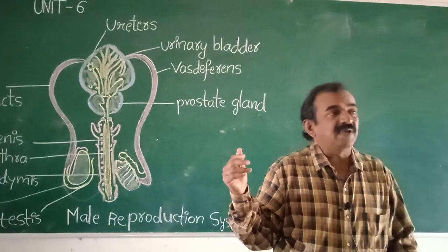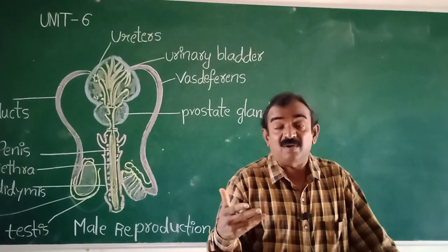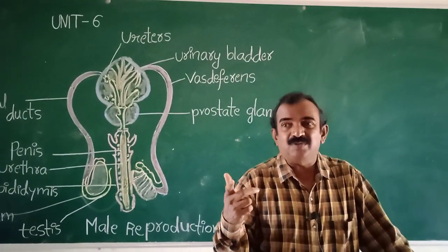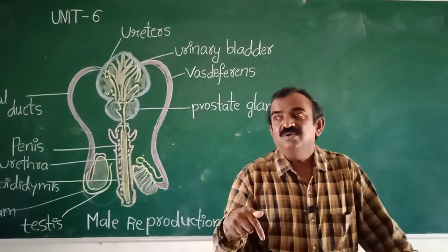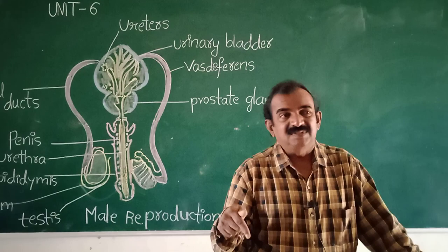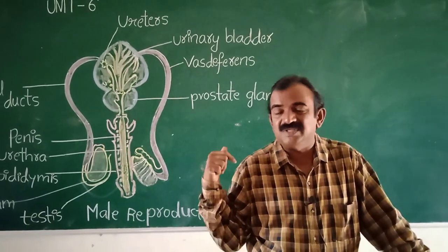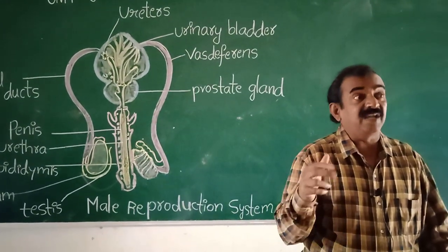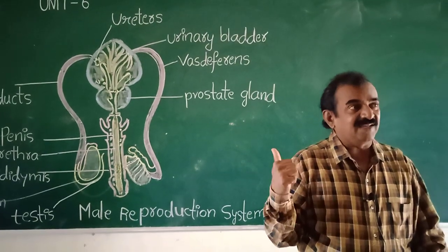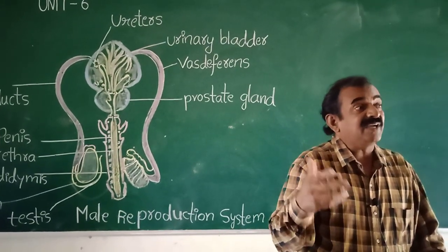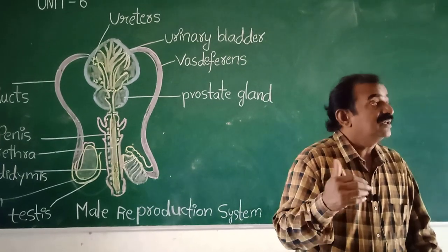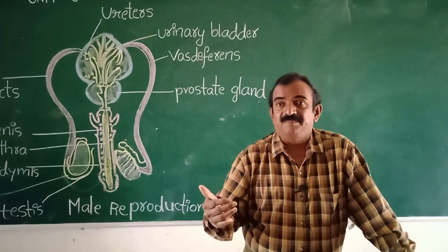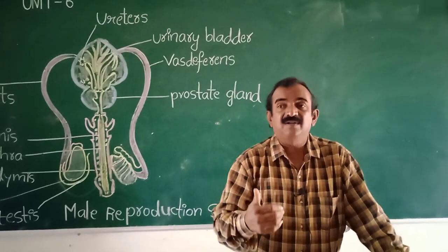Describe the male human reproductive system with the help of a labeled diagram. This is an 8-mark question this year — 2021, 2022, 2023. You need to write 8 to 10 lines and draw the diagram. If you draw the diagram and write a good description of more than 8 to 10 lines, you are getting full marks — 8 marks.